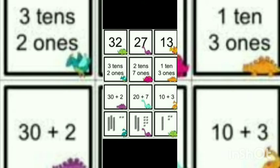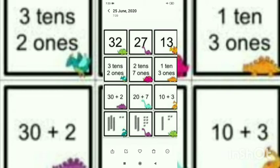The next number is 27. In 27, two tens and seven ones. So in numbers, we write 20 plus 7. For tens, we draw two blocks, and for seven, we draw one block of seven.